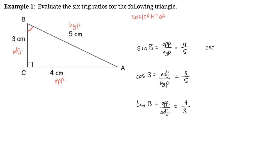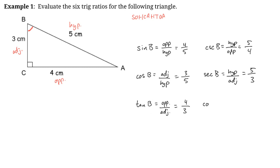Now let's do the three reciprocal trig ratios. The cosecant of angle B — that's the reciprocal of sine (note: cosecant starts with C but is the reciprocal of sine) — is hypotenuse over opposite, which is 5 over 4. Secant starts with S but is the reciprocal of cosine, giving hypotenuse over adjacent, which is 5 over 3. And cotangent is the reciprocal of tan, so it's adjacent over opposite, which is 3 over 4.